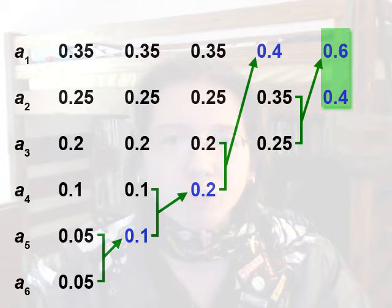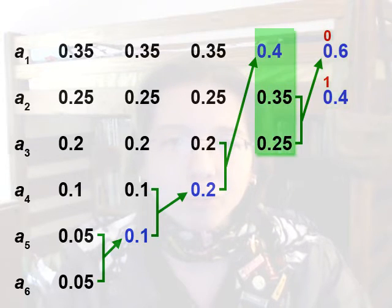Now we start assigning numbers. 0.6 will have number 0, 0.4 will have number 1. Move back to the list on the left. Number 1 carries over to 0.4. Number 0 goes from 0.6 in the last list to 0.35 and 0.25, which are numbered 00 and 01.